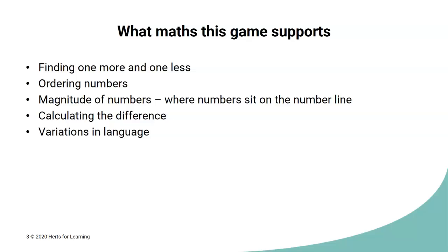What maths this game supports. It helps with the practice and rehearsal of finding one more and one less. This also then, of course, supports the order of the numbers. As we're using a number line, it helps with the children's understanding of the magnitude of the numbers, where those numbers sit on the number line. Because throughout the game, you're constantly trying to work out how far you are from your goal, you're always calculating the difference between the number that you're currently on and your target number. So, as well as finding one more and one less, you're actually doing lots of calculation at the same time.